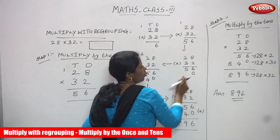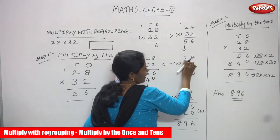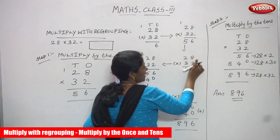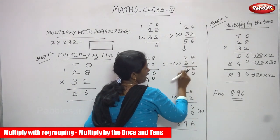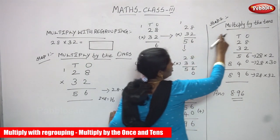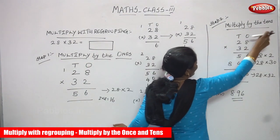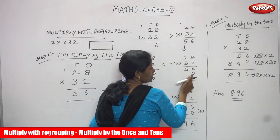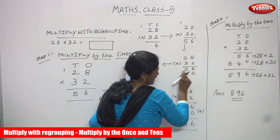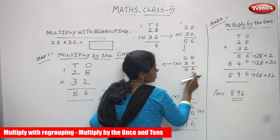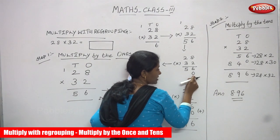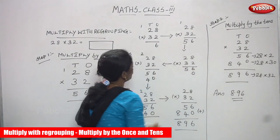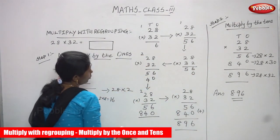Step two: multiply by the tens. 28 has already been multiplied by 2; the answer is 56. Now before going to multiply by the tens, you have to put 0 in the ones place, because the ones place is already done. So I have put 0 in the ones place.